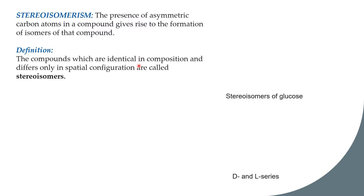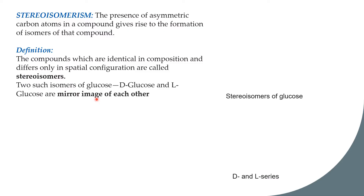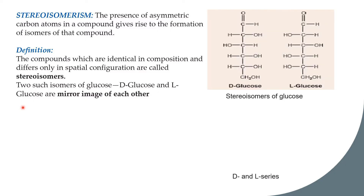Stereoisomers are compounds that are identical in composition but differ only in their spatial configuration — their structure is different due to the different positions of chemical groups. Two such stereoisomers are D-glucose and L-glucose, which are mirror images of each other. The molecular formula of both compounds is C6H12O6, but there are structural differences.